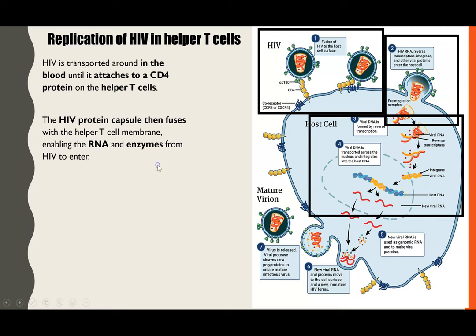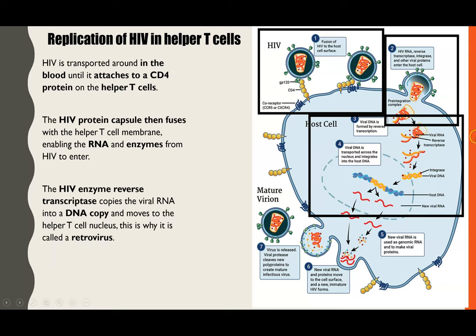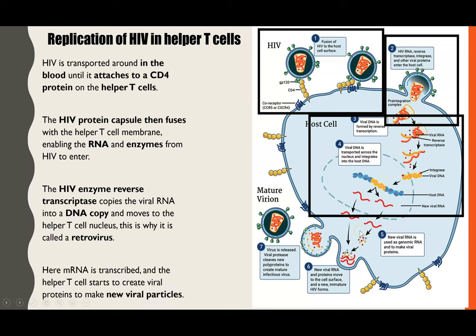Once the RNA and enzymes are within the white blood cell, the HIV enzyme reverse transcriptase turns the viral RNA into copies of DNA. That DNA then moves into the nucleus of the helper T cell, resulting in new particles of HIV being replicated. As it does this, it destroys the helper T cell — and that's actually the damage that HIV is causing.